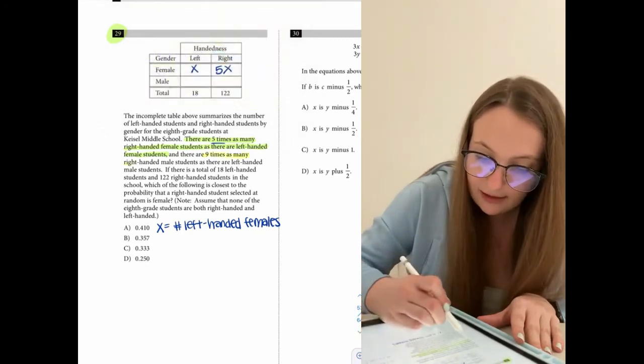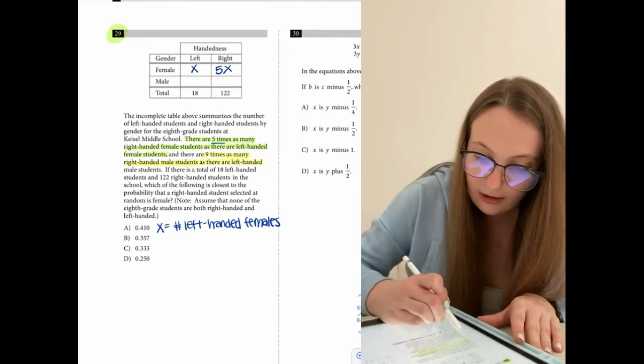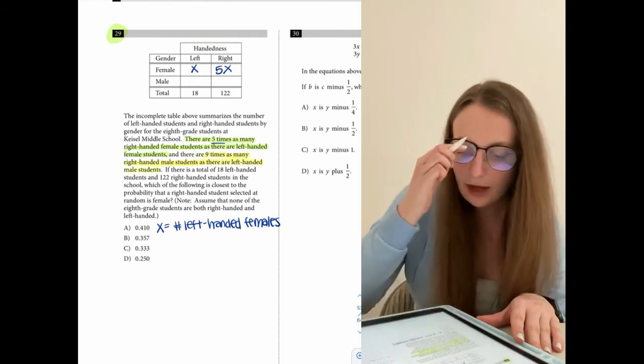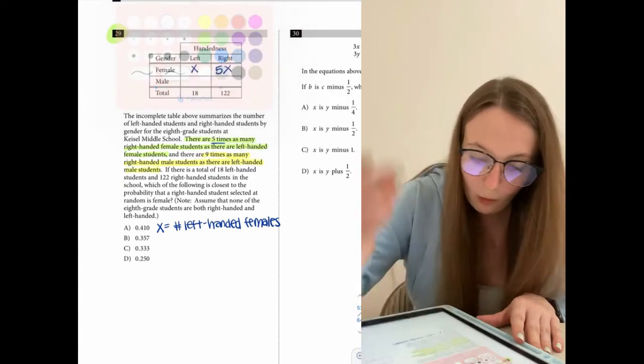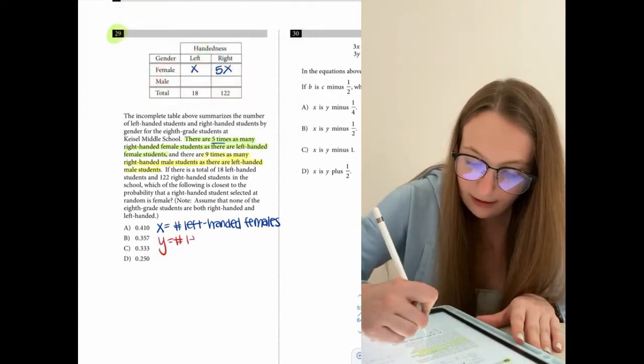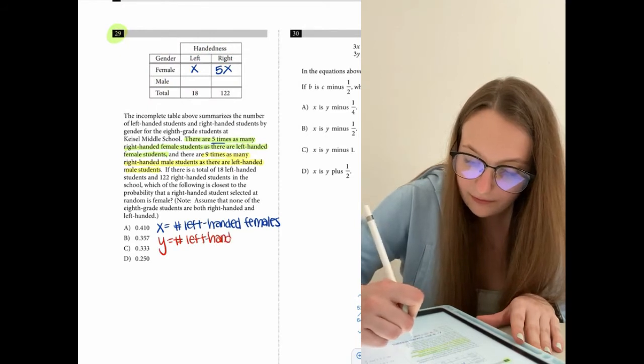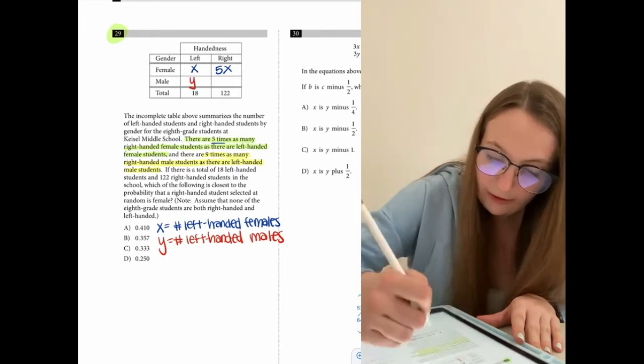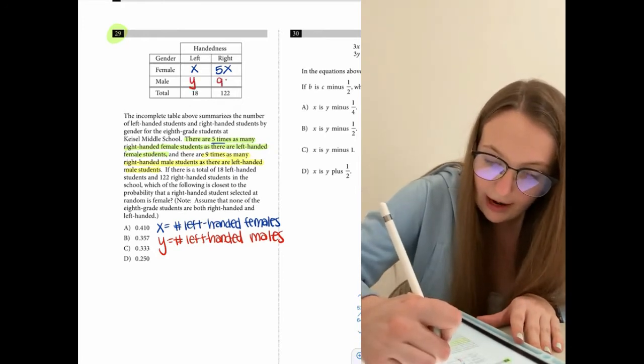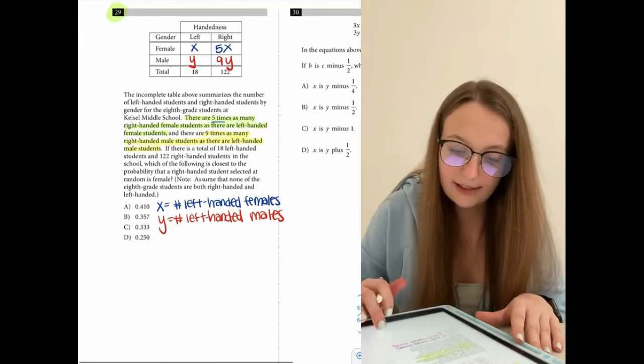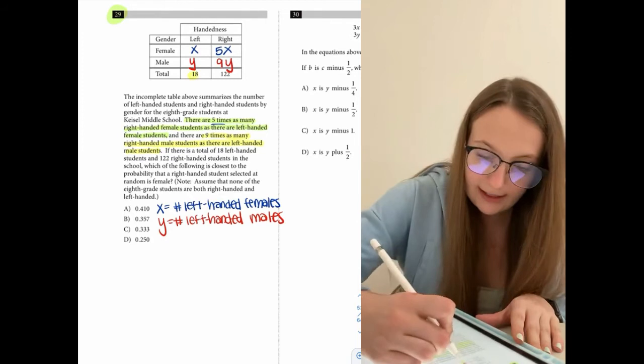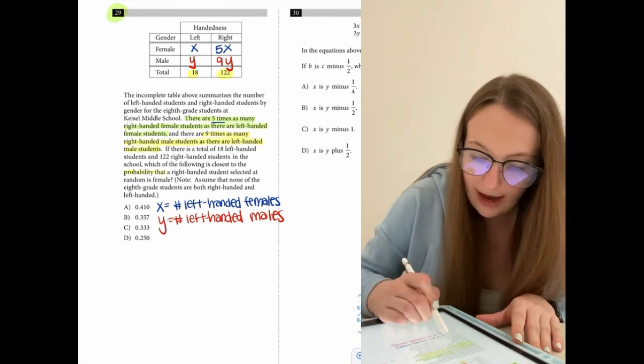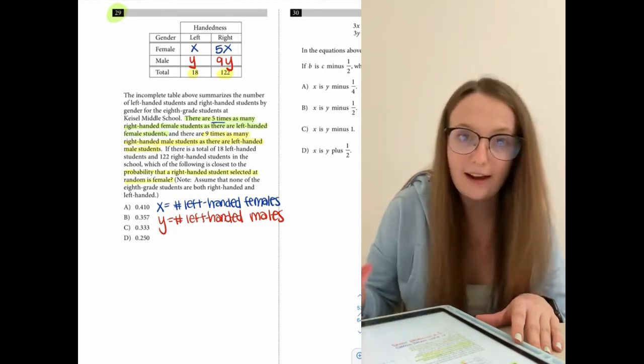And then the next part of this problem, they tell us there are nine times as many right-handed male students as there are left-handed male students. So what that means then let's call Y the number of left-handed males. So what that means then is that the left, we will call Y. And if there are nine times as many right, we would call the right nine Y. So they tell us that we already know this though, as for the chart, there are 18 left-handed and 122 total right-handed. And then we're asked for the probability that a right-handed student selected at random is a female.